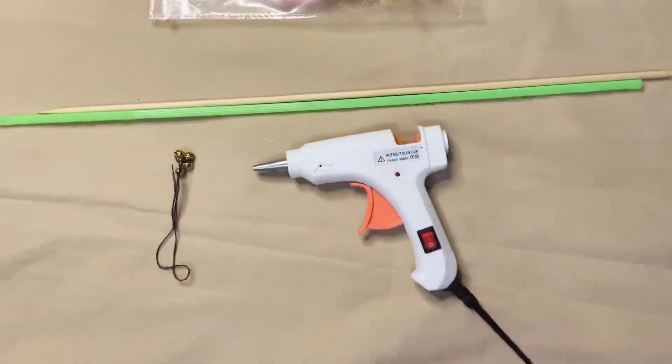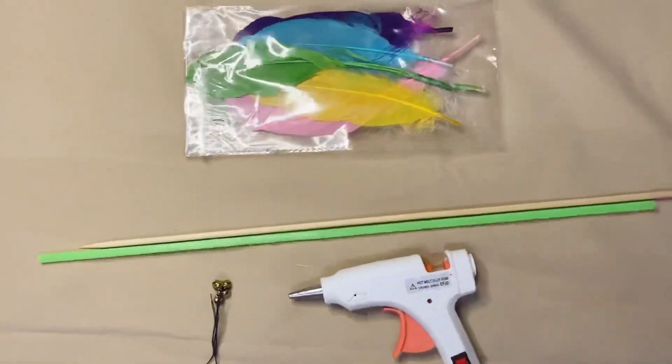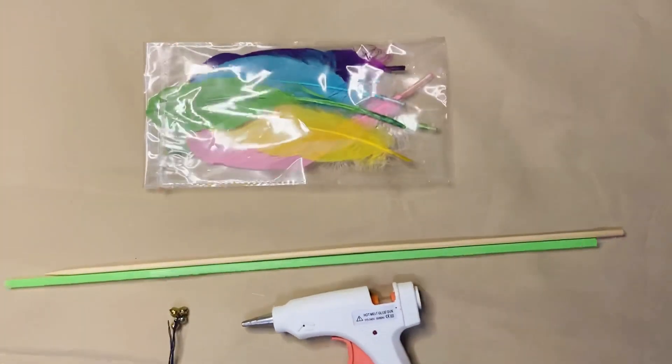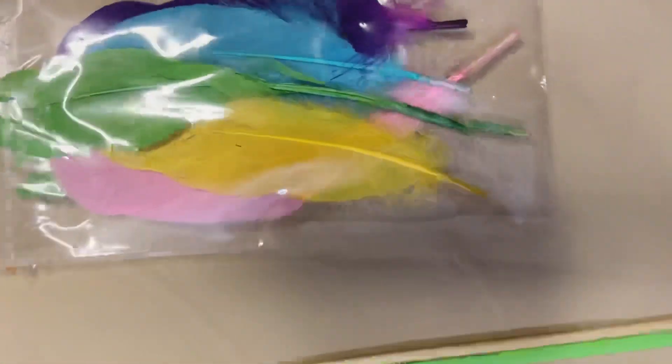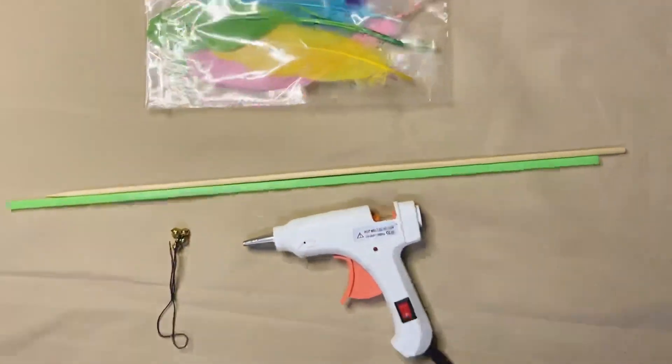We will need a glue gun, sticks, balloon sticks, craft sticks, a wooden key, some feathers, and small little bells. So let's start.